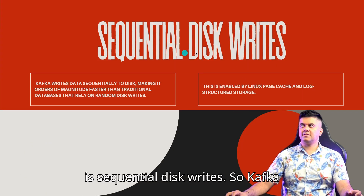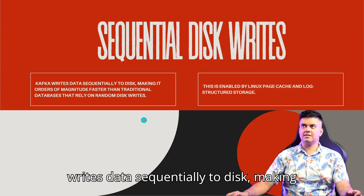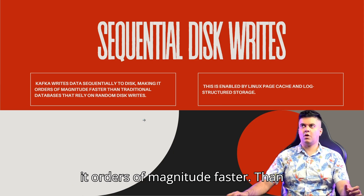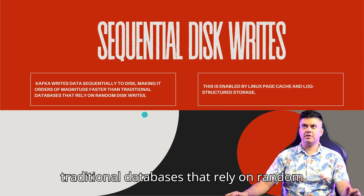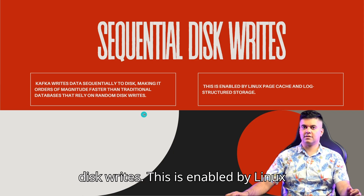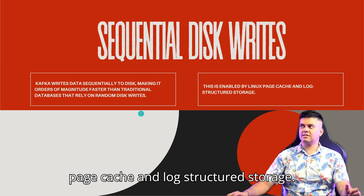Second is sequential disk writes. Kafka writes data sequentially to disk, making it orders of magnitude faster than traditional databases that rely on random disk writes. This is enabled by the Linux page cache and log-structured storage.